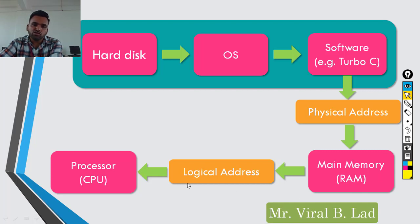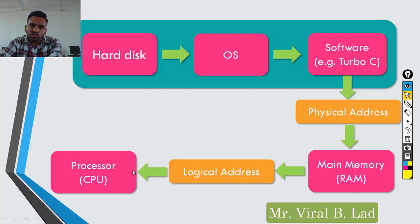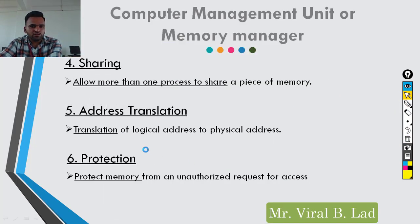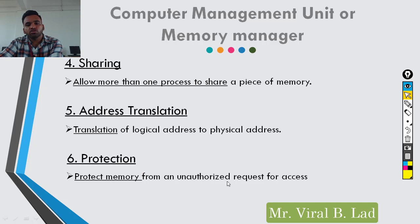When a process uses the processor, it uses a logical address. When the program executes and output arrives, the information goes back to main memory using the logical address, which is then mapped to the physical address. So the logical address must be translated to the physical address. When your processor finishes working with the logical address, it must be converted to a physical address — this conversion is done by the address translation operation.